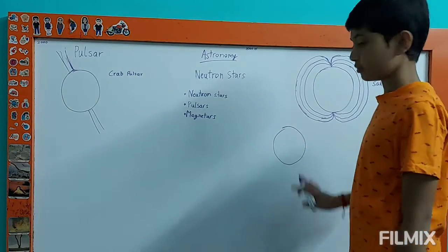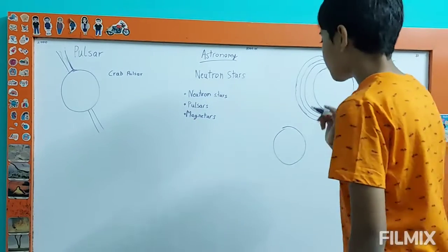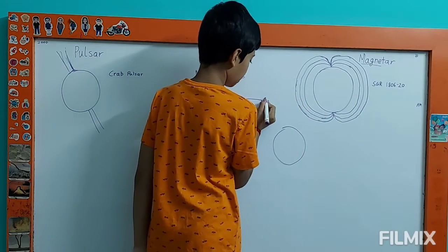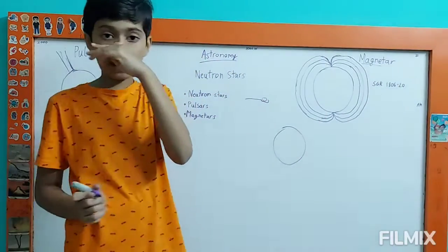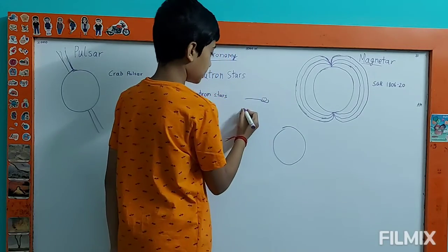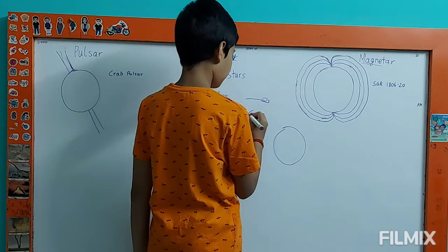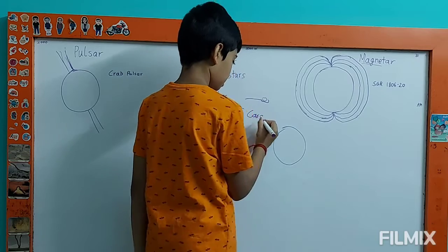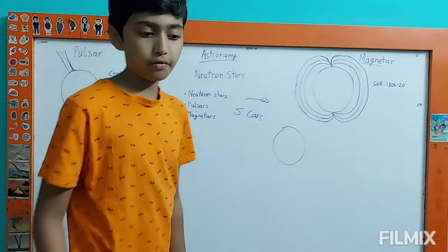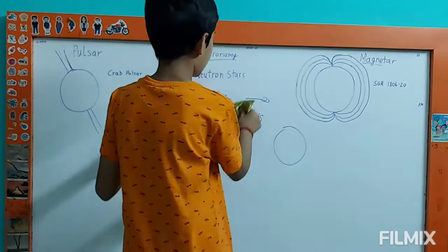Neutron stars are very dense. For example, one teaspoon of neutron star matter weighs about the same as five cars. That's how dense it is.